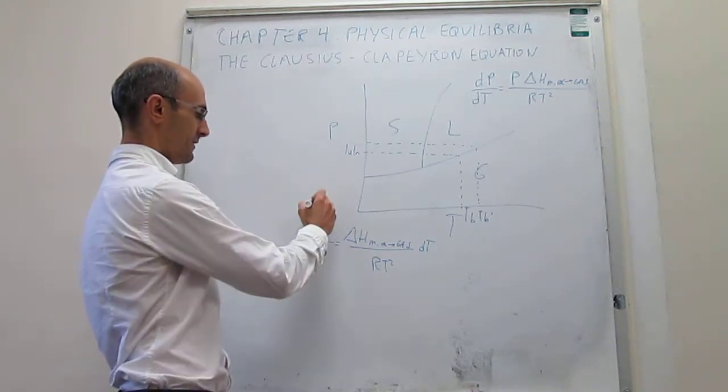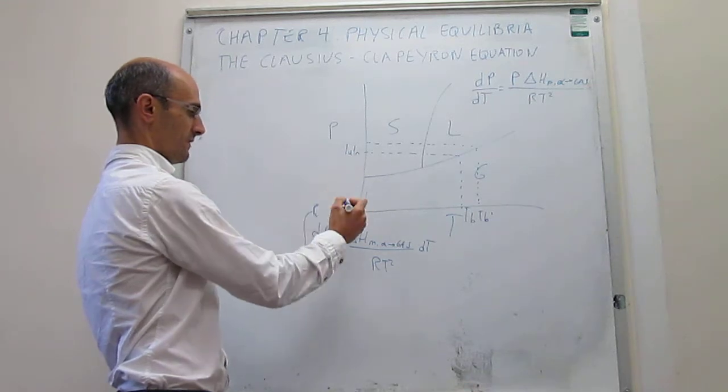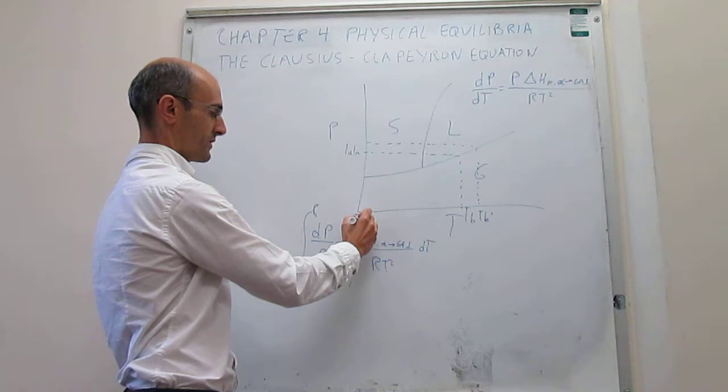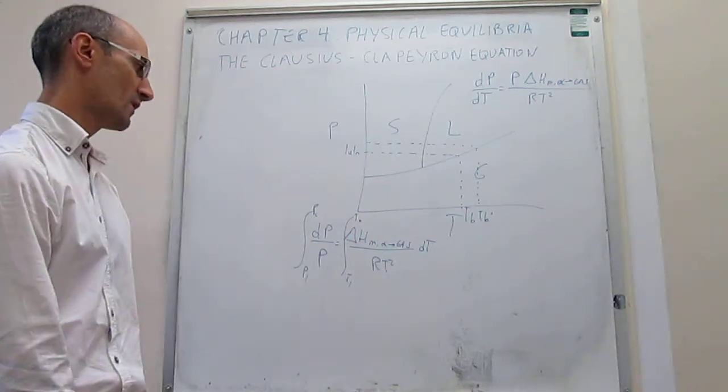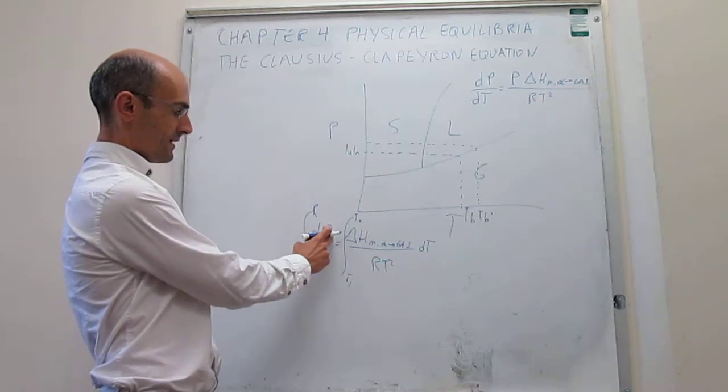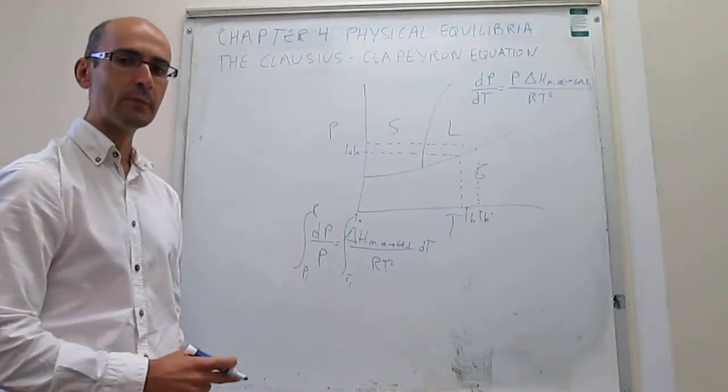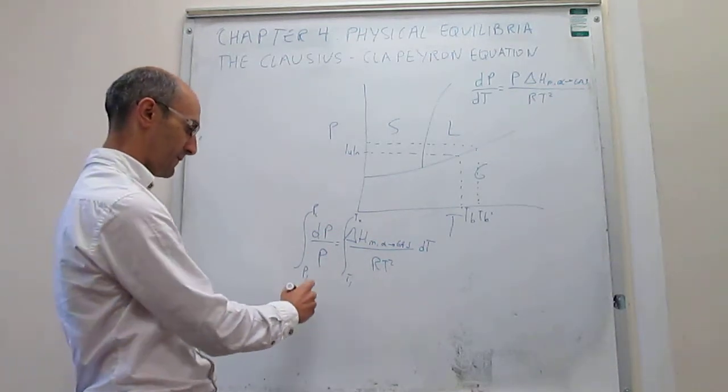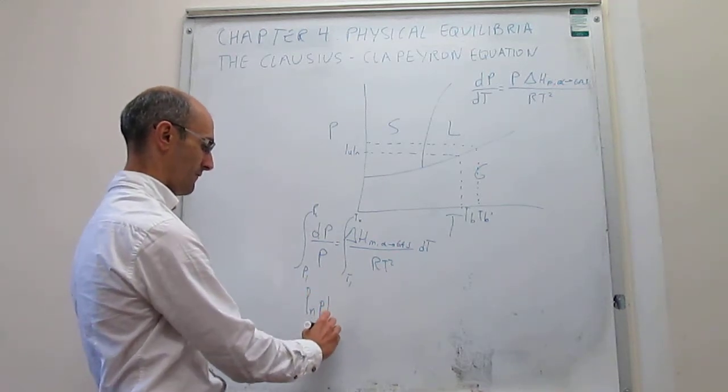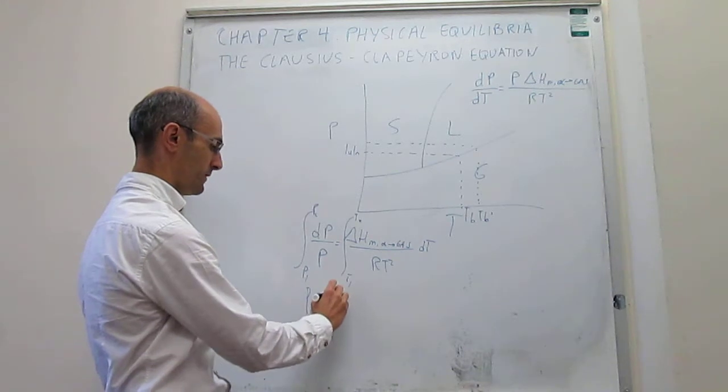We want to see the integration between the two boiling points and the two pressures, T1 and T2. Let's see how this integral turns out. Notice that the integral of dP/P is simply the natural log of P, evaluated from P1 to P2.